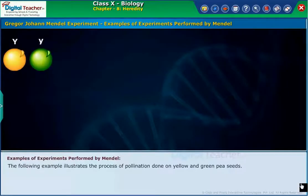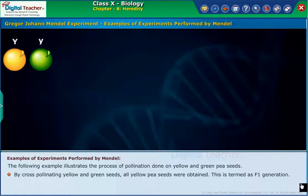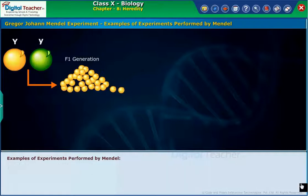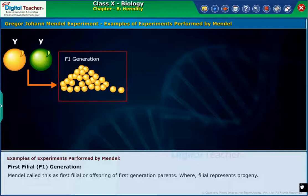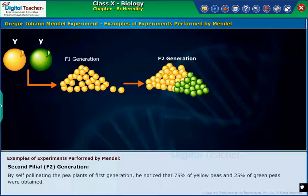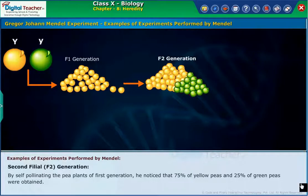The following example illustrates the process of pollination done on yellow and green pea seeds. By cross-pollinating yellow and green seeds, all yellow pea seeds were obtained. This is termed as the F1 generation — the first filial generation — where filial represents progeny. In the F2 generation, by self-pollinating the pea plants of the first generation, he noticed that 75% yellow peas and 25% green peas were obtained.